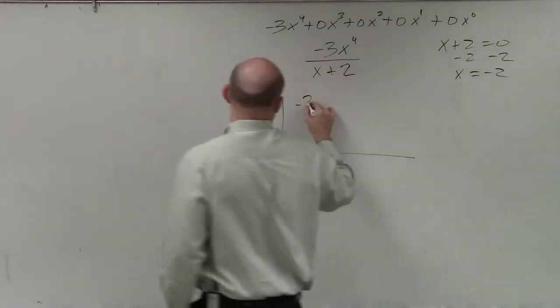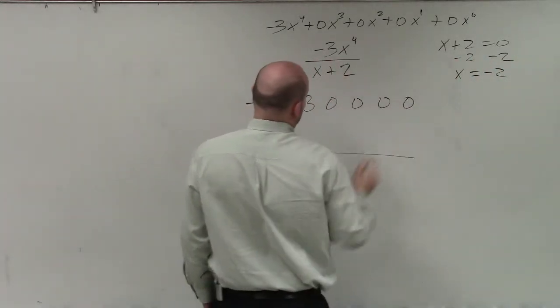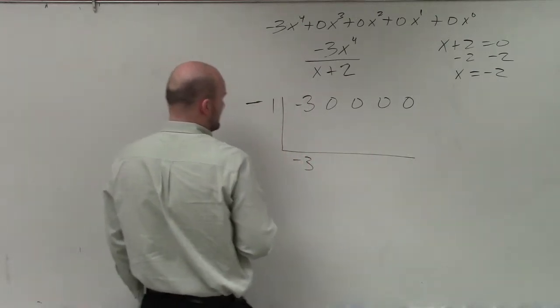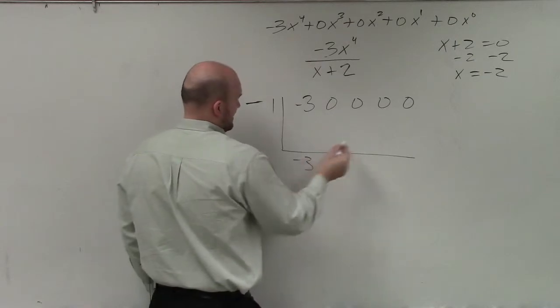Now remember, the first rule is to bring down -3. So -3 down. -3 times -2 is going to be a positive 6. Again, bring it down 3.